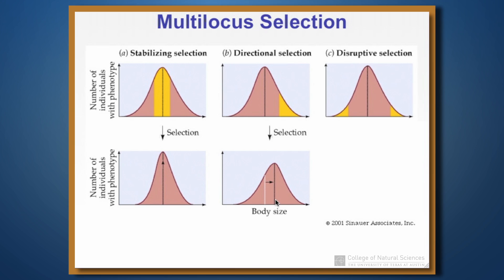The third type of selection is disruptive selection. This is a situation where both extremes are favored but not individuals in the middle range of values. So really large individuals are favored and really small individuals are favored. This results in a distribution showing disruption of the initial value, and we get two peaks — a bimodal situation. If this goes on long enough, you'll actually get two separate groups of small and large individuals.